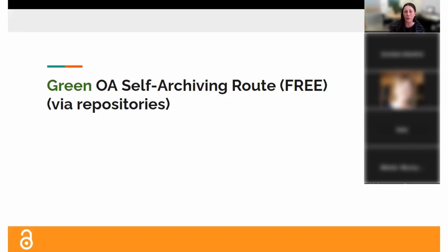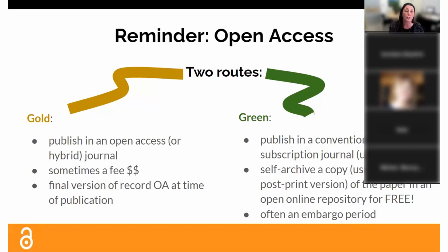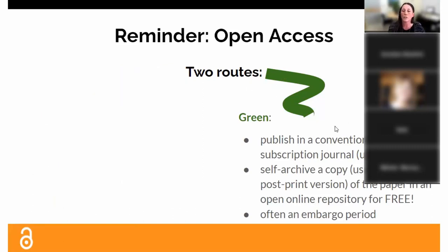The green route — I think this is what most people are unfamiliar with, so I want to spend time explaining it because I think it's an underused route. It is free. Unless you're publishing in one of those gold journals, if you're publishing in a conventional journal, this is a free way you can make that manuscript openly available. It also complies with the tri-agency policy and most other funders. You still publish in a conventional journal behind a paywall with no fee, then self-archive a copy — which is that author's accepted manuscript — in a repository, usually after an embargo period.